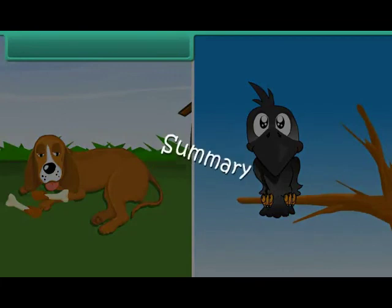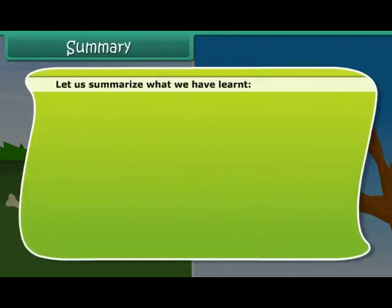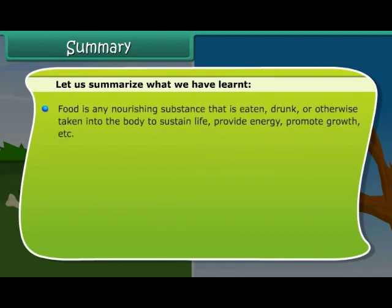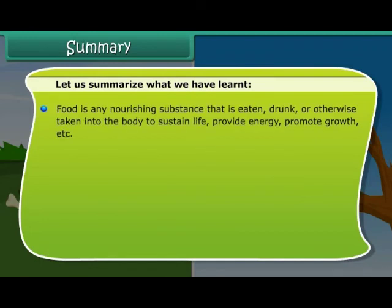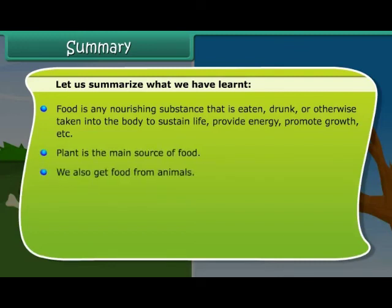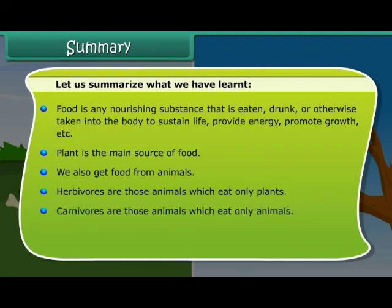Let us summarize what we have learned. Food is any nourishing substance that is eaten, drunk or otherwise taken into the body to sustain life, provide energy, promote growth, etc. Plant is the main source of food. We also get food from animals. Herbivores are those animals which eat only plants. Carnivores are those animals which eat only animals.